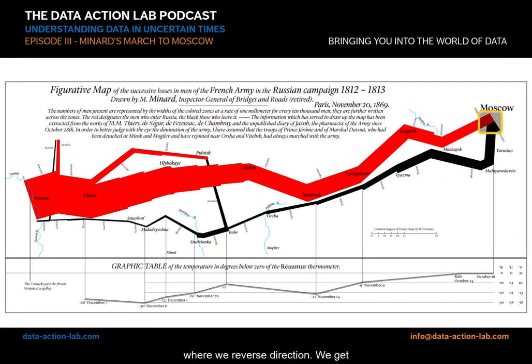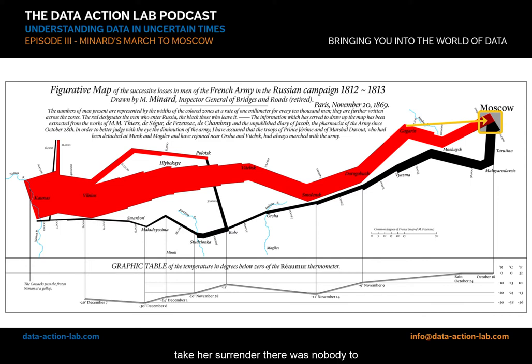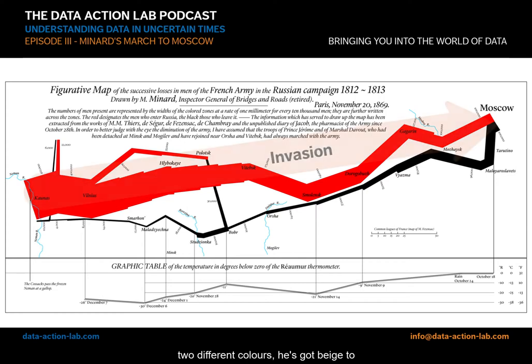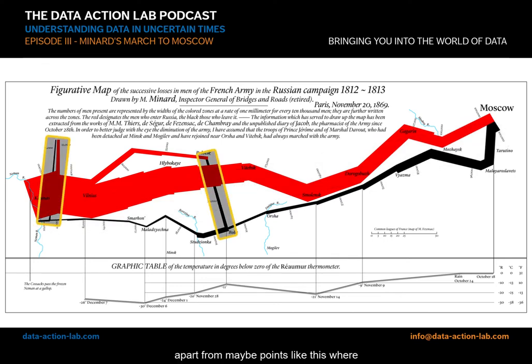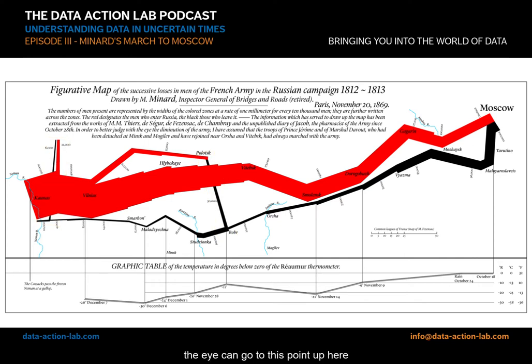There are a hundred other things we can talk about in this visualization, but one very obvious one that's often overlooked is direction of travel. We can see there's an inflection point where we reverse direction — we get to Moscow, and the Russians actually evacuated Moscow. There was nobody to take a surrender from, so Napoleon had no choice but to turn around. Minard chose to have two different colors — beige going out and black for the return journey. He's made it very obvious, and the eye can go to that point and see that something is different.